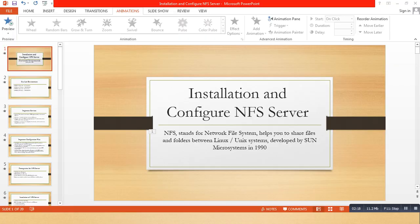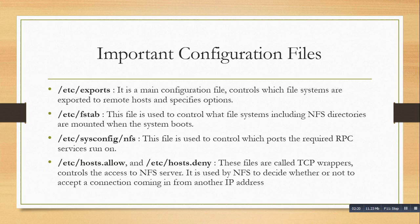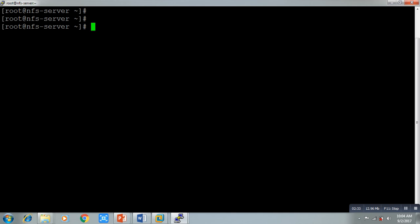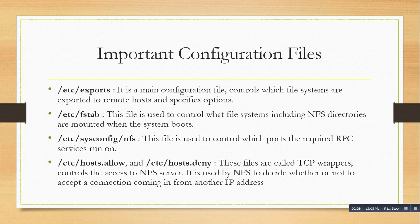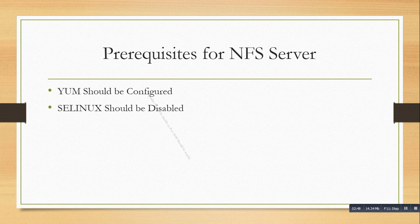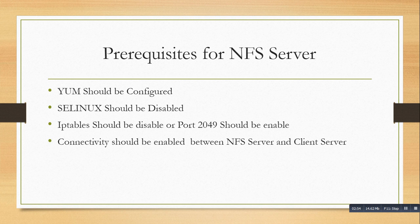This is my server — the NFS server. On the NFS server, this is our important configuration file. The prerequisites are: SELinux should be disabled, iptables should be disabled, and network connectivity should be enabled between both the NFS server and client server. These are the requirements before we start our NFS server installation.